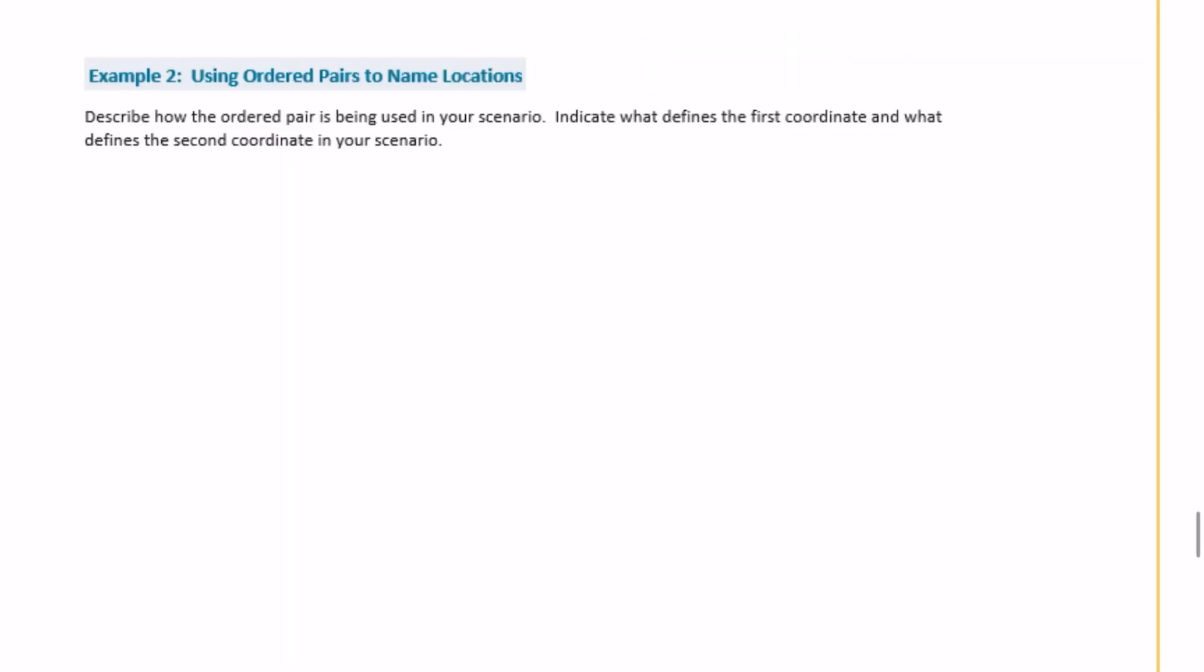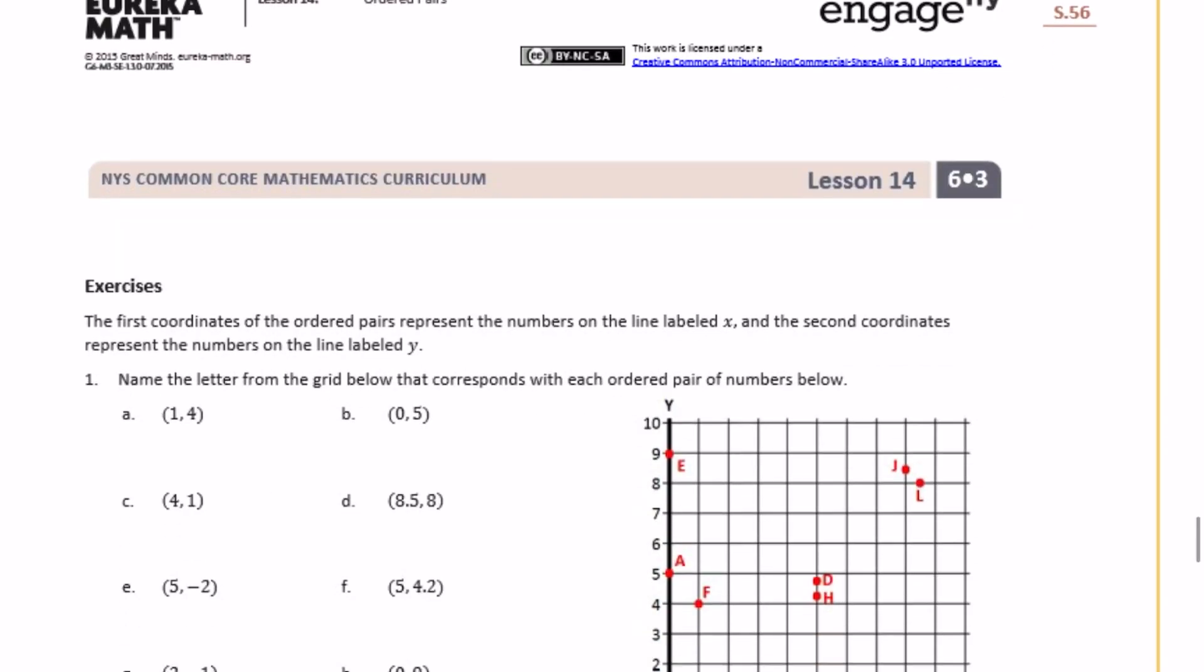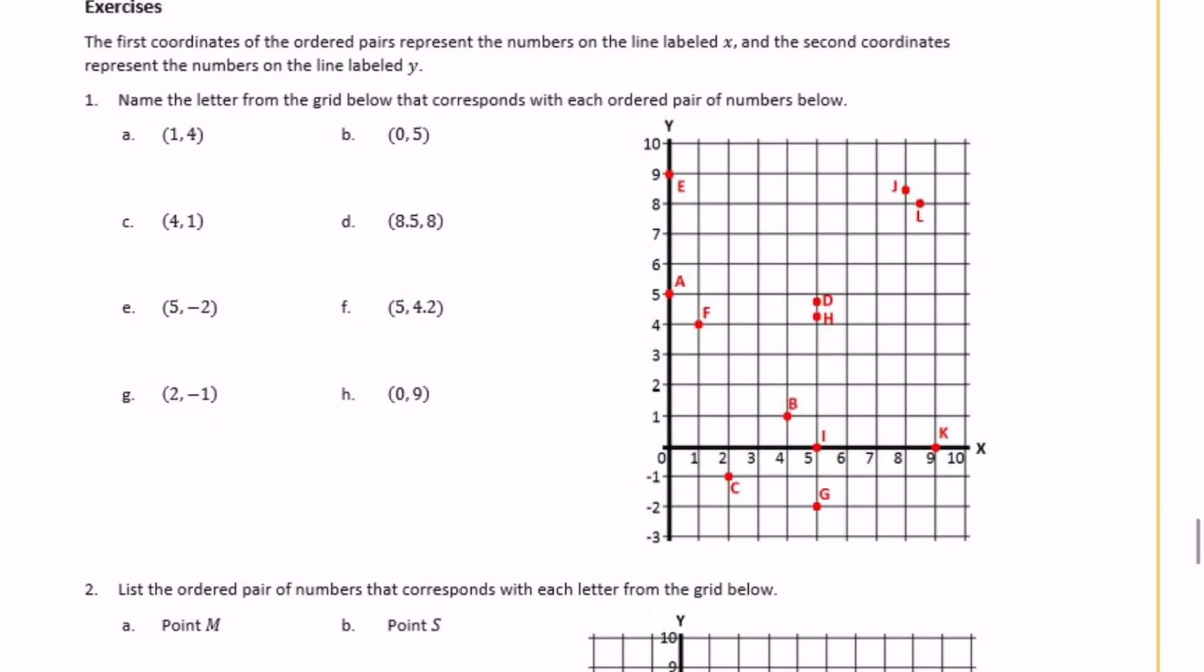Example 2 I'm going to skip because that's something that you would only do if you were in class. And go down to the exercises. The first coordinates of the ordered pairs represent the numbers on the line labeled x. So remember this right here is the x coordinate. So anything along that line is an x coordinate. That's the x axis. And then going vertically, we have the y axis. So the x always comes before the y in the coordinate pair. This is the x, this is the y. And you can remember that because it's alphabet order, or you can just remember xy.